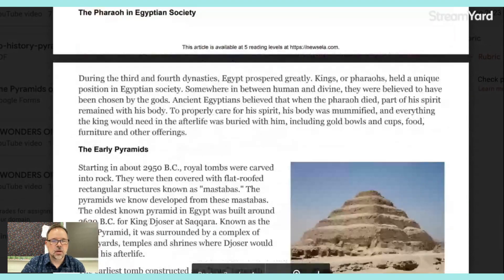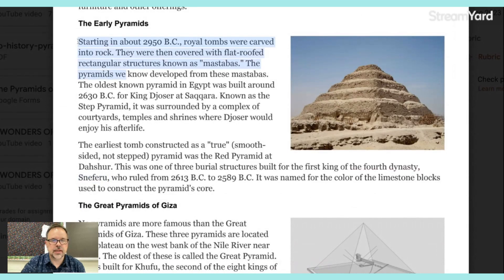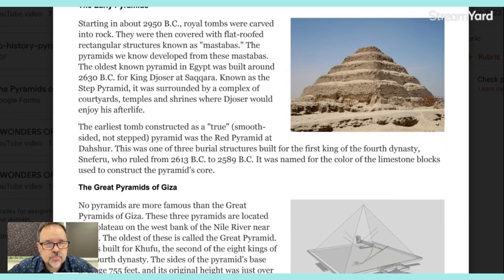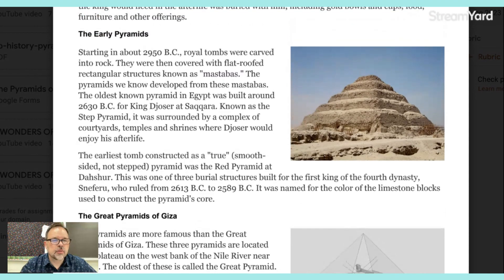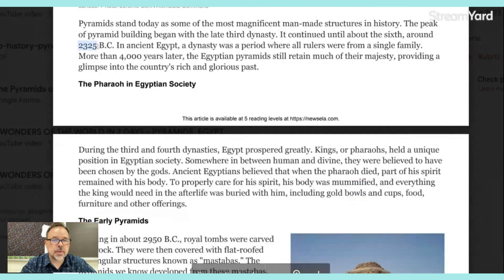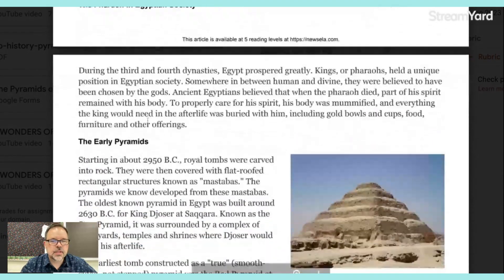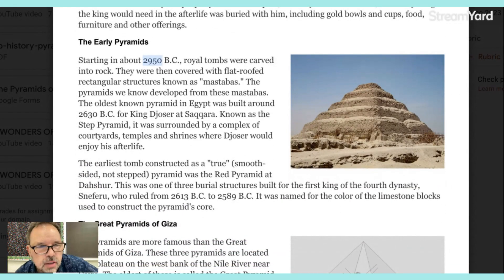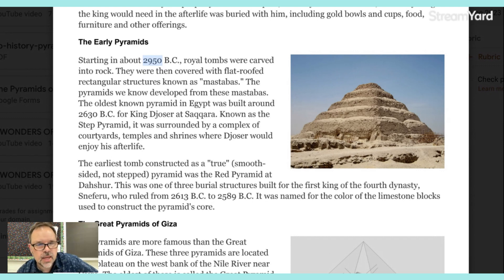We will just start reading right here. So this little bit that we will read has a couple of pretty hard words. Mastabas — yeah, you're going to want to put that in question number three. Mastabas are the early pyramids. Starting around 2950 B.C., royal tombs were carved into rock and then covered with flat-roofed rectangular structures known as mastabas. The pyramids developed from these mastabas.